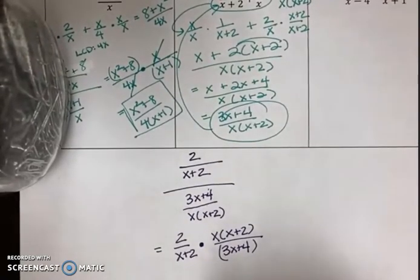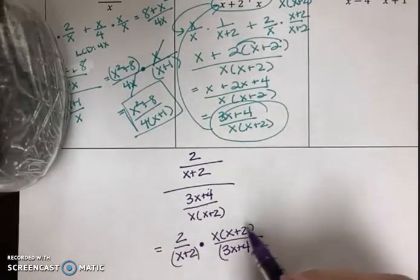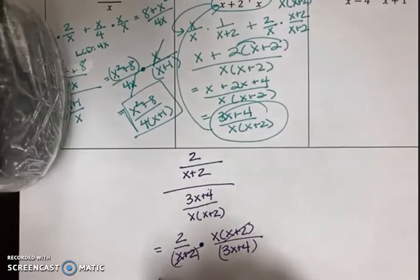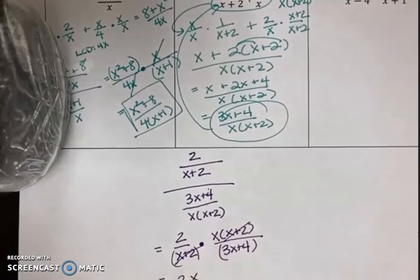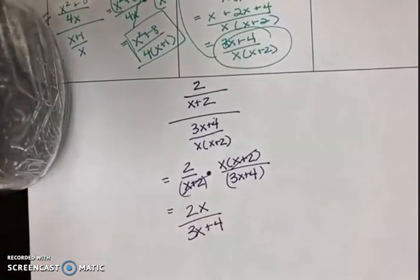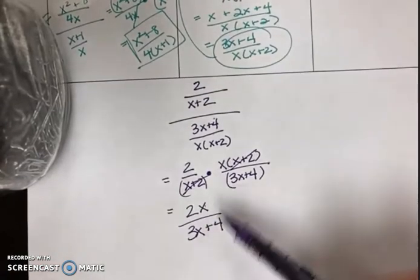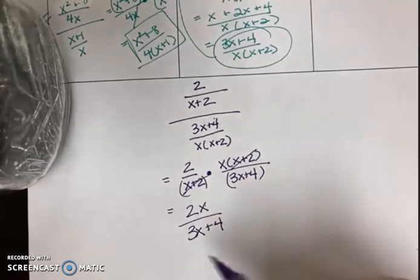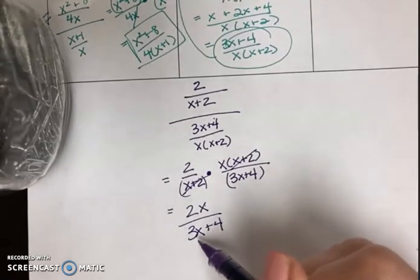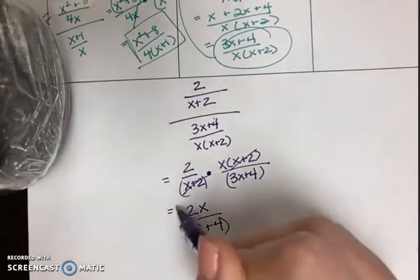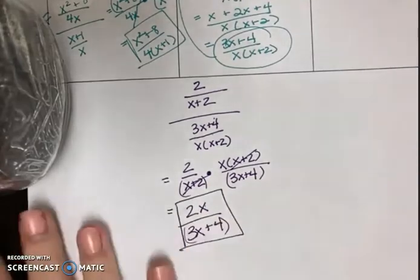Let's see if anything cancels. The x plus 2's appear in the numerator and denominator. So I am just left with 2x over 3x plus 4. You cannot simplify any further. You can't cross off those x's. And the reason why is because we are adding that 4 to the 3x. Remember, this is an expression. It stays together. So that's my final answer.